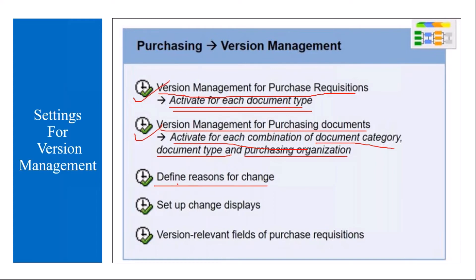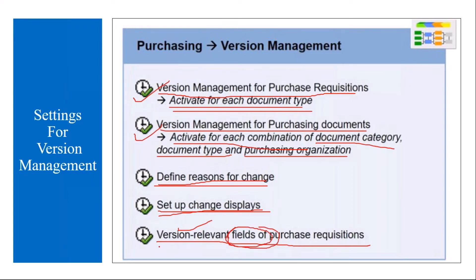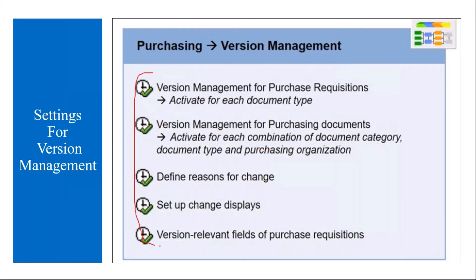You also define reasons for change — you have the option of maintaining some reasons for change. Then you set up change displays, which controls how changes are displayed. Additionally, you configure version-relevant fields for purchase requisitions, meaning you specify which fields, when changed, will trigger a new version to be created.